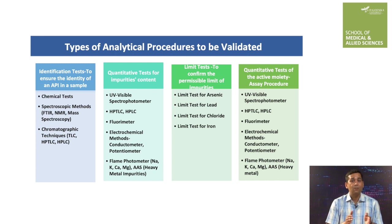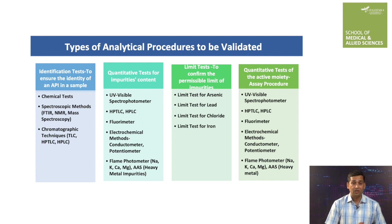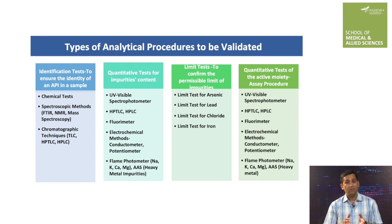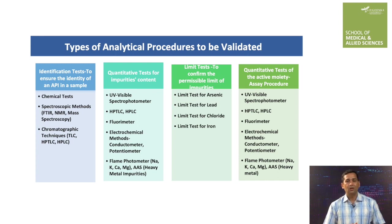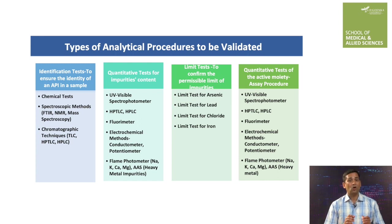In case impurities carry an electric charge, electrochemical analytical methods such as conductometer and potentiometer can also be used. If impurities are sodium, potassium, calcium, and magnesium, you can use a flame photometer. While to quantify heavy metals, atomic absorption spectroscopy is used.